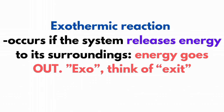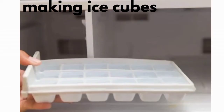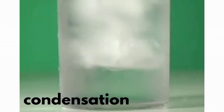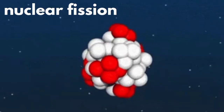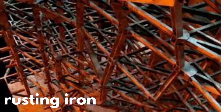An exothermic reaction occurs if the system releases energy to its surroundings — energy goes out. Think of 'exo' as in exit. Examples of exothermic reactions are making ice cubes, condensation, nuclear fission, and rusting iron.